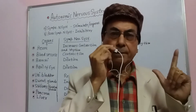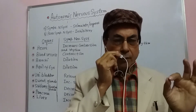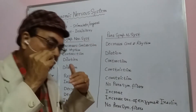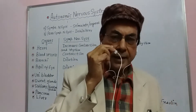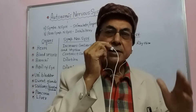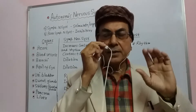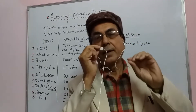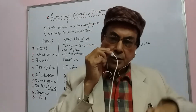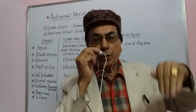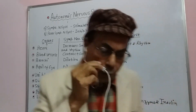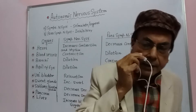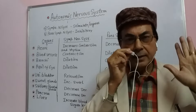The autonomic nervous system has been divided into two parts: one is the sympathetic, and the second is the parasympathetic. If one is stimulatory — meaning it excites or activates — then the other will inhibit it, reduce it. So we can say that if one part is stimulatory, the other is inhibitory.